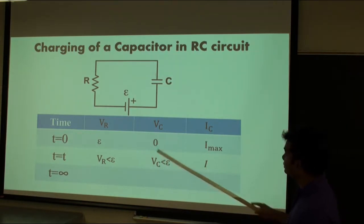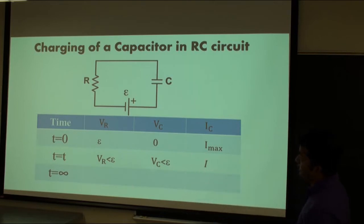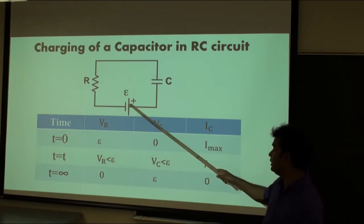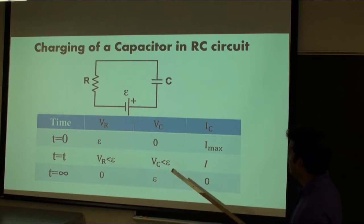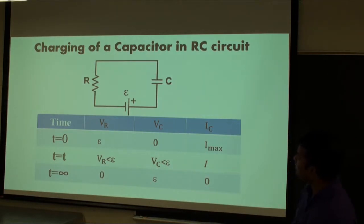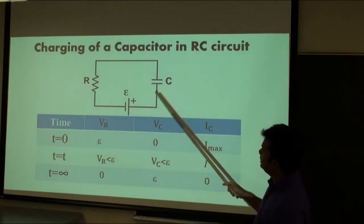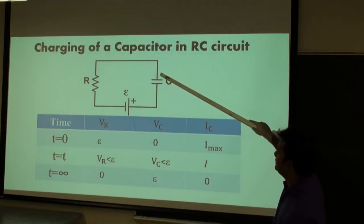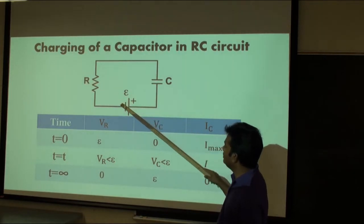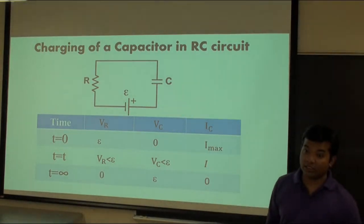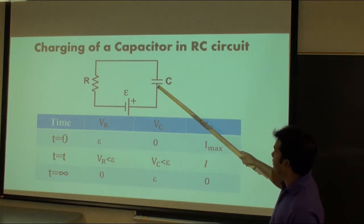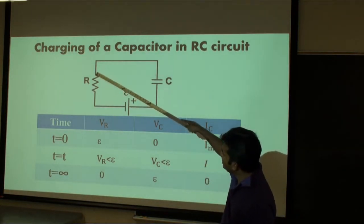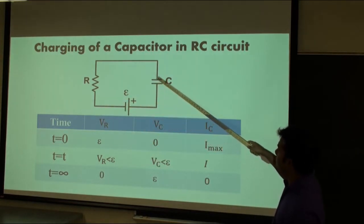We will have some values which are less than the battery voltage and the voltage across the capacitor will increase. After a long time, the capacitor will be fully charged. Then the potential difference across the capacitor will be equal to the potential difference of the battery, and the potential difference across the resistor will be zero, and the current in the circuit will be zero. In a simple capacitive circuit, when T equals zero, the capacitor acts like a short circuit, so the voltage across R will be equal to the voltage across the battery. After a long time, we can consider the capacitor as an open circuit, so there will be no current in the circuit, the voltage across the resistor will be zero, and the voltage across the battery will be equal to the voltage across the capacitor.